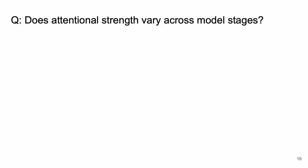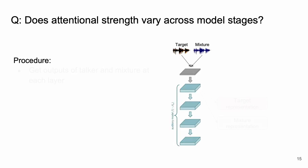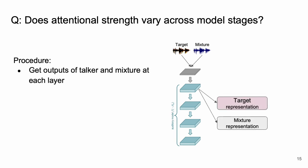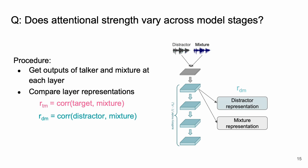For a final analysis we're going to ask how the strength of attention varies across the stages within the model. To do this we're going to obtain the output representations of a single talker, let's say the target, and a mixture from each layer and then we're going to compare those representations. We can do the same thing for the distractor voice. The point here is that a given set of correlations is going to be high if the mixture and single talker representations share information.